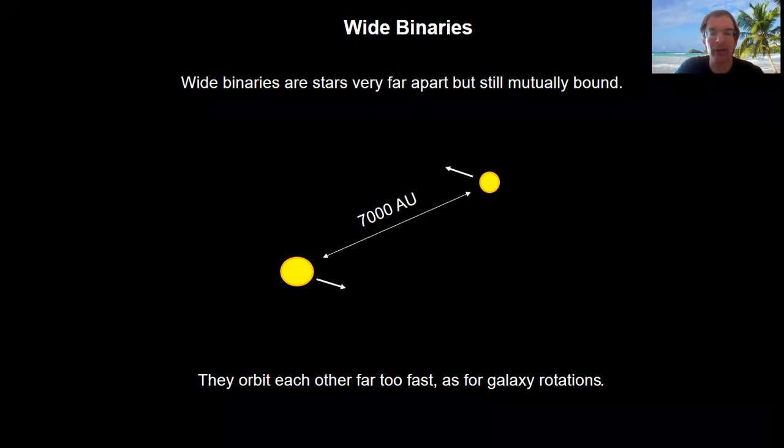So here are two stars. They're 7000 AU apart, and the gravitational attraction between them is very small. So conventional physics states that they should not be bound, and certainly that they should not be orbiting each other at the speed we see them to be. They orbit each other far too fast, rather like galaxy rotations.